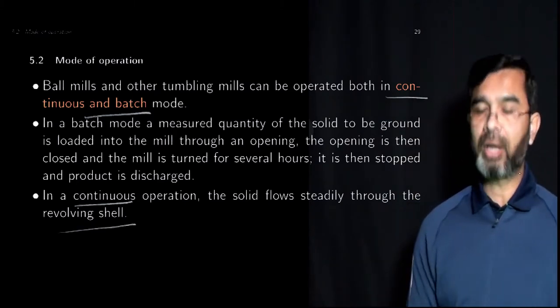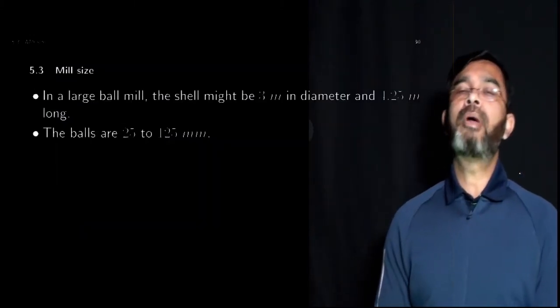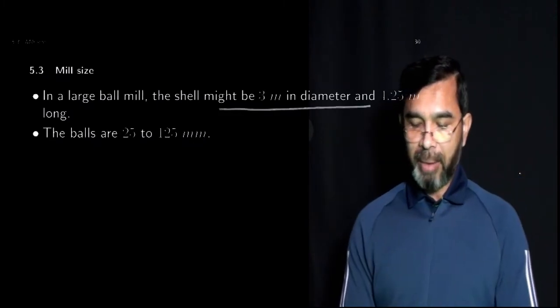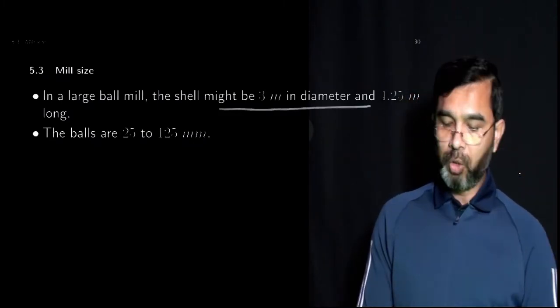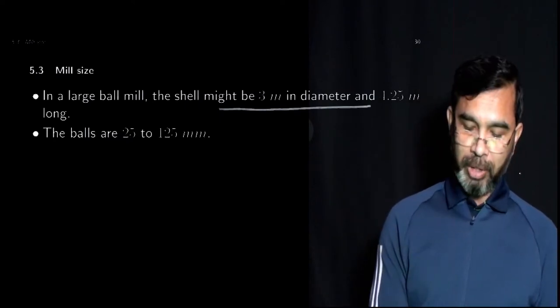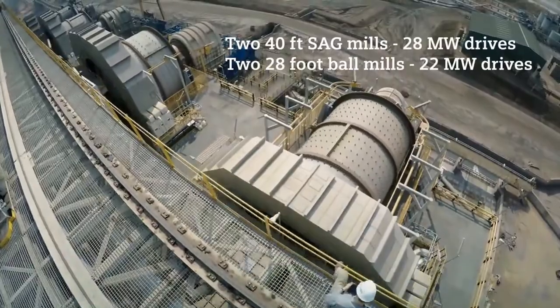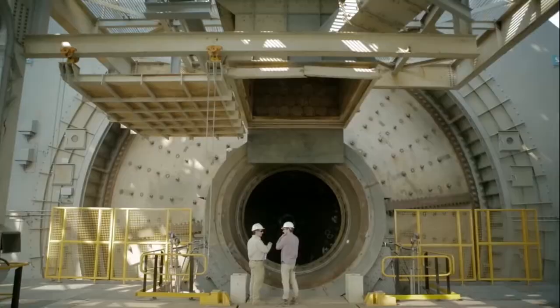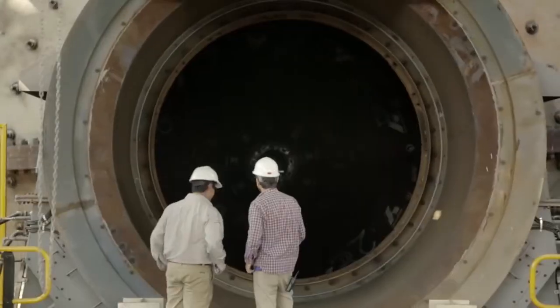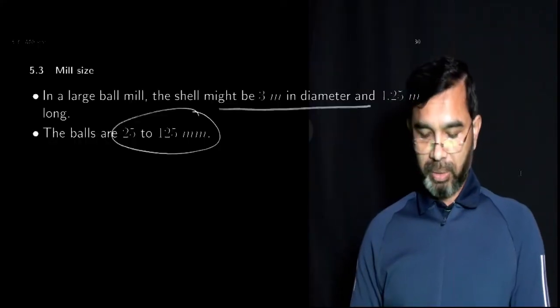Ball mills can be of different sizes. The shell might be three meters in diameter or up to 4.25 meters long. The balls are between 25 and 125 millimeters. That said, there are recent developments in ball mills where the sizes may be really big depending on large mining operations.